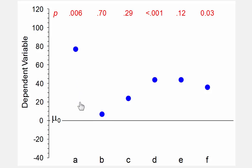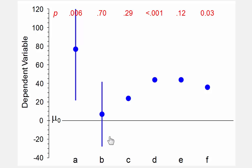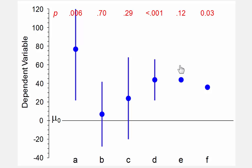So it would come down to maybe about there. For 0.7, the confidence interval extends well past the null hypothesis value. For 0.29, coming down beyond the null hypothesis value but not all that far. For 0.001, the confidence interval extends part of the way but somewhere around about here. For 0.12, it extends past the null hypothesis value but not all that far. And for 0.03, it extends almost all the way down but not quite.